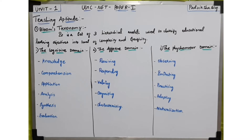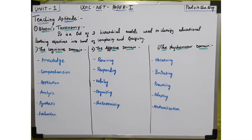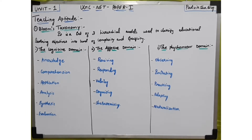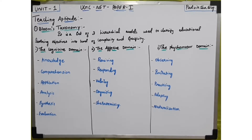In the cognitive domain, we have six categories. The first is knowledge — the ability to recall data or information. An example is a child who recites the English alphabet. When a teacher teaches ABCD and the child can recall it, that is knowledge.